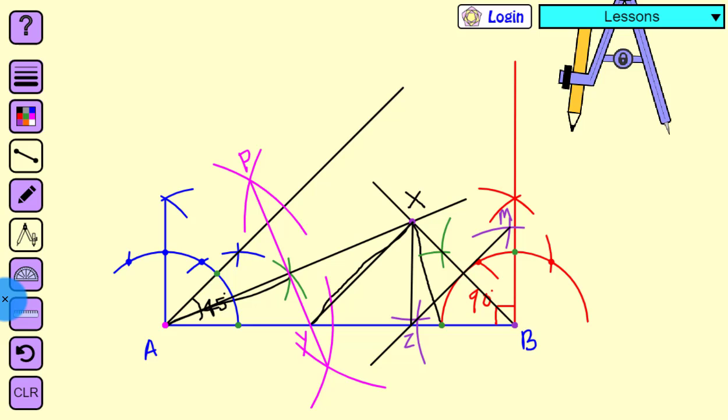Now you can ask, how does this work? Here, PY is the perpendicular bisector of AX, so AY equals XY. And here, MZ is the perpendicular bisector of XB, so ZB equals XZ. And YZ equals YZ. Hence, the length of AB equals XY + YZ + XZ, which is 11 centimeters.